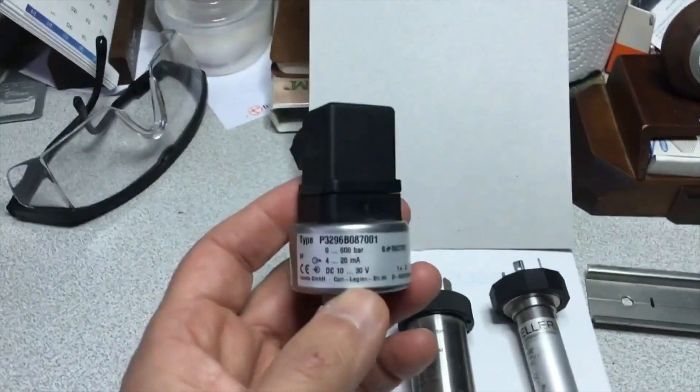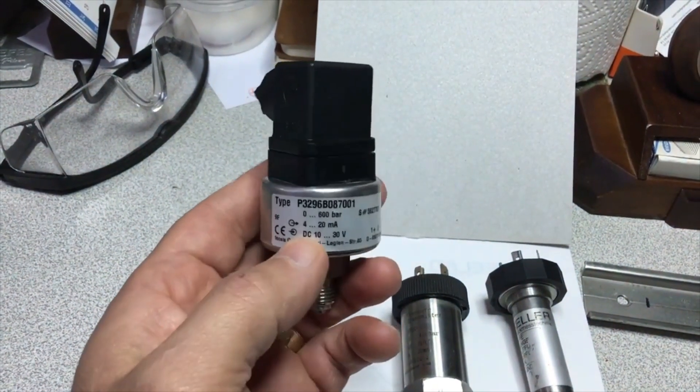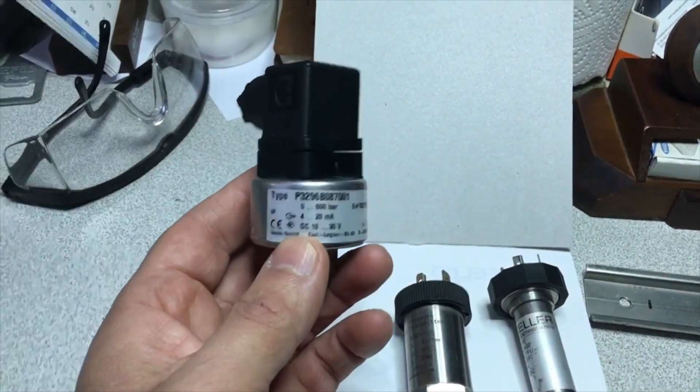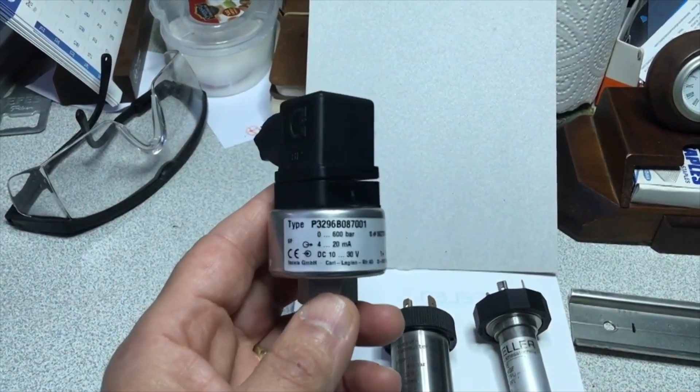Apart from that, it is written that the output current is 4 to 20 milliamperes. The supply voltage is seen to be between 10 to 30 volts. As you know, since we usually use 24 volt DC supply in industrial automation, it meets these limits and stays between the limits.